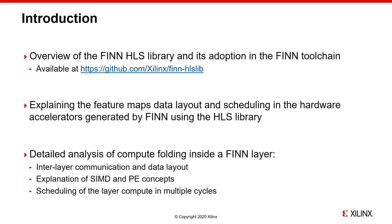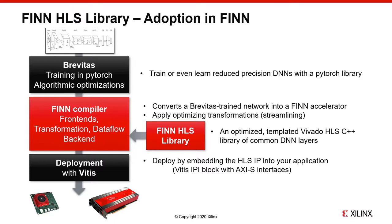Here we can see the general flow used in FINN to deploy a neural network on FPGA. There are three main components used during the compilation flow. The first is Brevitas, a machine learning library based on PyTorch that allows you to train a deep neural network with reduced precision using quantization-aware training. The second is the FINN compiler, which generates the dataflow architectures with reduced precision support. The code generated in this step is based on the components described in the FINN HLS library. The final step is the deployment phase, where the synthesized IPs will be embedded into your target device using the Xilinx toolchain.